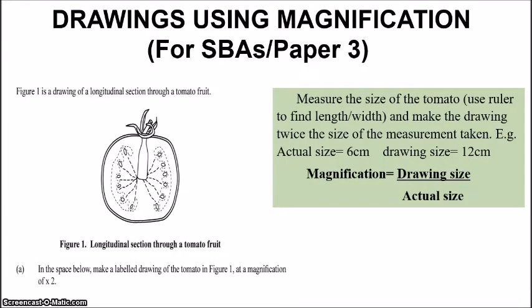So in terms of drawings using magnification, and this is a particular type of question that can come, especially on the SBA paper. So here we have an example. Figure 1 is a drawing of a longitudinal section through a tomato fruit. And it says in the space below, make a label drawing of the tomato in figure 1 at a magnification of times 2. So in order to do this, you first need to measure the actual diagram given. So you're going to measure the size of the tomato in the diagram. You're going to use a ruler to measure that.